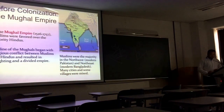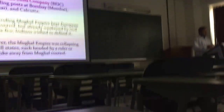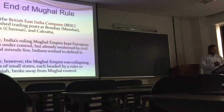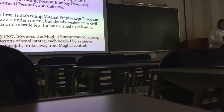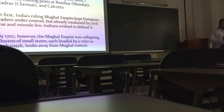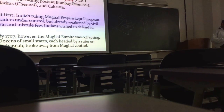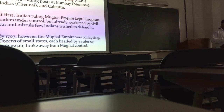This is a basic idea. So here you see the map. End of Mughal rule, 1600s — the British East India Company, it was a company name, they came here for business. They established trading posts at Mumbai, Madras — Chennai — and Calcutta, India. At first, India's ruling Mughal Empire kept European traders under control, but already weakened by civil war and misrule. India's unity wished to be defended by 1707. However, the Mughal Empire was collapsing into dozens of small states, each ruled by a ruler or Maharaja — Mughal means the empire in the local Hindi language — and broke away from Mughal control.